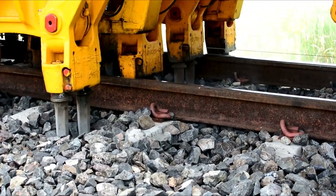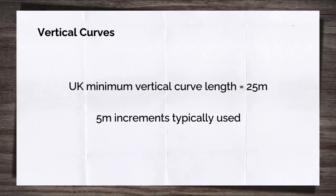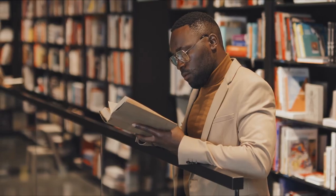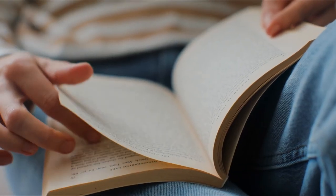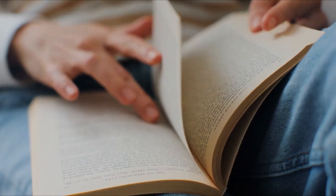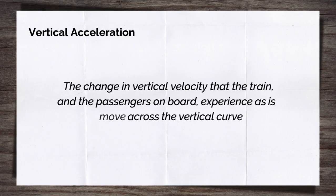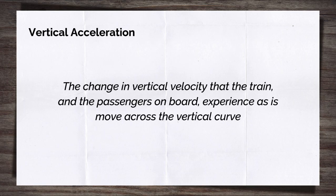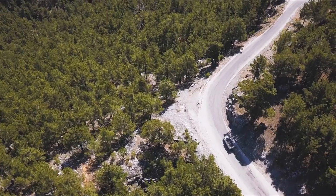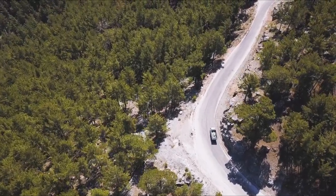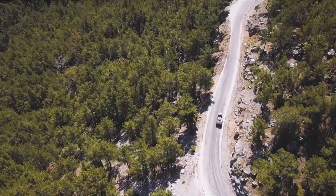When it comes to determining the length of curves to be used, in the UK there is a minimum length of 25 metres, with designs typically sticking to 5-metre increments. Vertical acceleration is the change in vertical velocity that the train and passengers on board experience as they move across the vertical curve. You and I experience vertical acceleration as the feeling of being pushed down or lifted up in our seats. Have you ever driven over a sharp hilltop in a car at speed and felt your stomach drop? This is vertical acceleration.